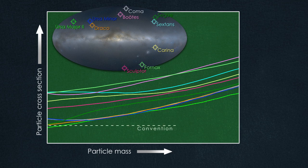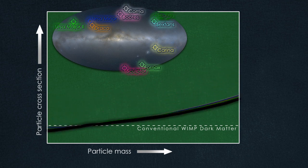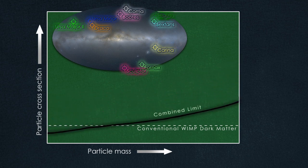In this graph, the dashed line marks the sweet spot where conventional expectations for WIMP dark matter align with what we know about our universe. Even when scientists combine all of the Fermi data from all ten of the dwarfs, they see no sign of gamma rays.